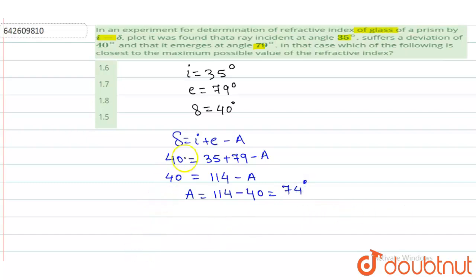Now we have to find the maximum possible value of refractive index. The maximum value of mu is given by sine of (delta plus A) divided by 2, divided by sine of A divided by 2.